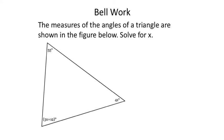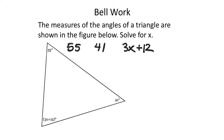Here's the bell work for the day. The measures of the angles of a triangle are shown in the figure below. What we've learned already in this unit is that the three angles on the inside of a triangle all add up to 180. So we have a 55-degree angle, a 41-degree angle, and that oddball expression. We're going to add those together and expect that to equal 180 degrees — if it wasn't 180, we wouldn't have a triangle.